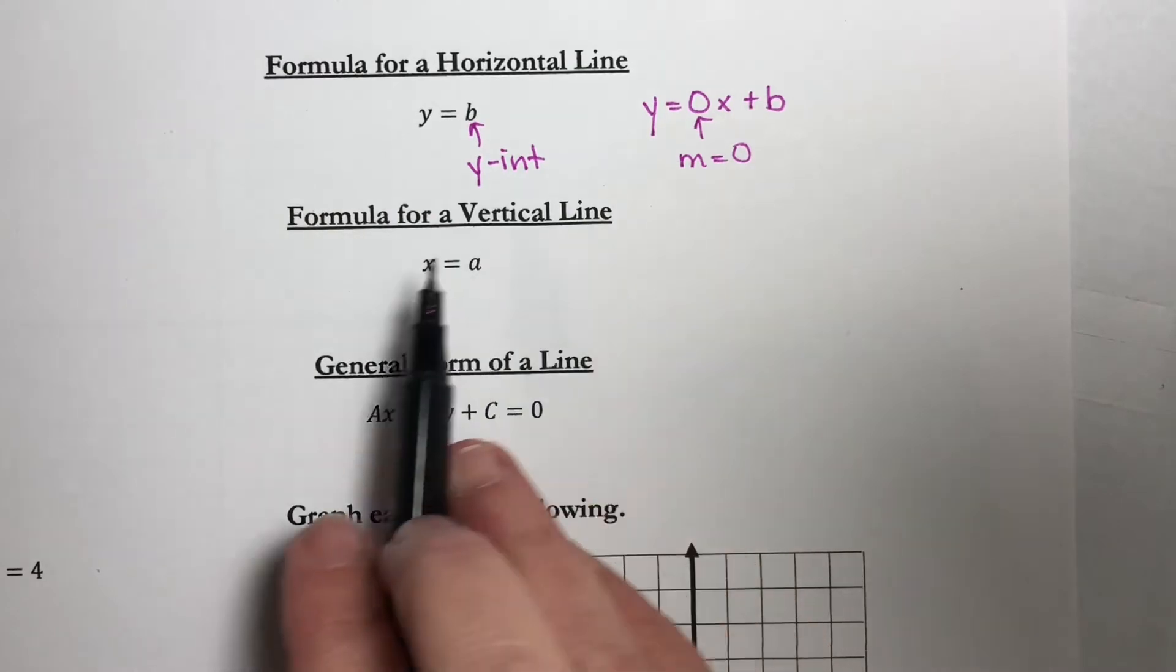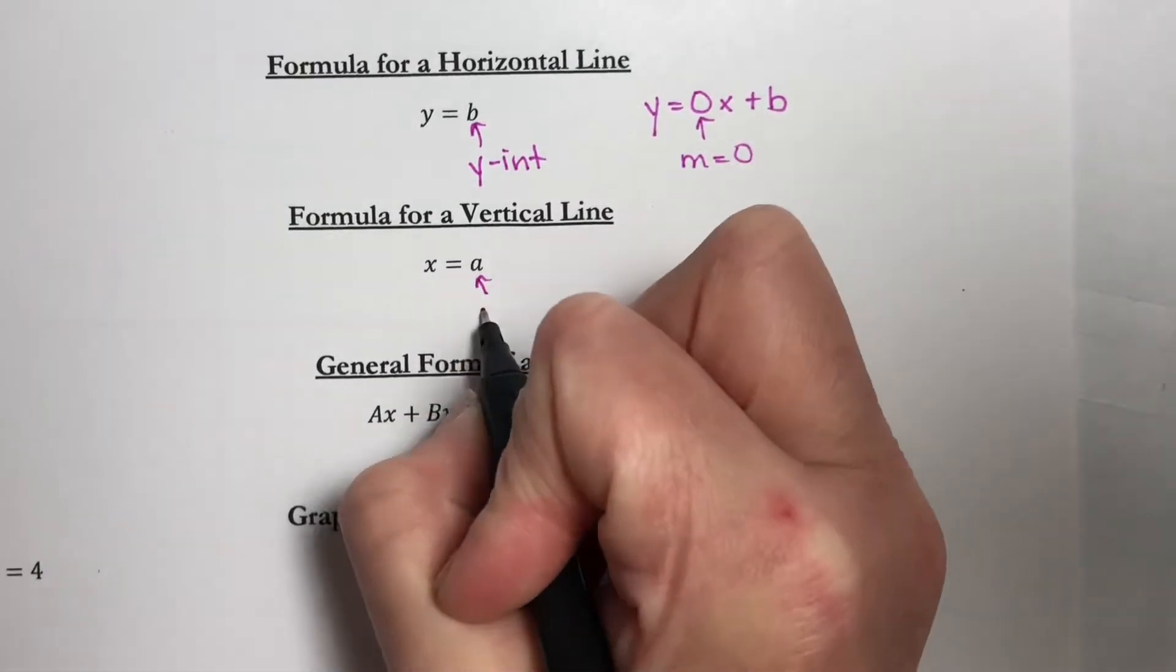The formula for a vertical line is x equals a, and a is our x-intercept.